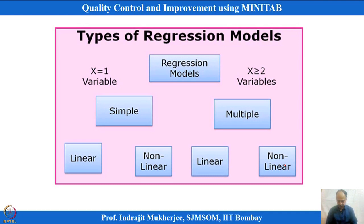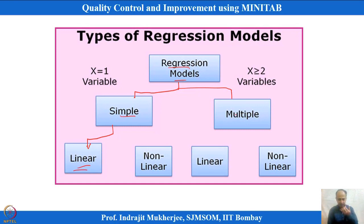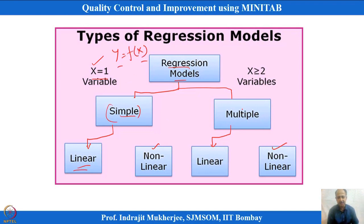There are different types of regression models. Simple linear regression has one X and one Y. Multiple regression has more than one X variable — up to n variables — with one Y. Both simple and multiple linear regression are important here. Non-linear relationships, such as polynomial equations, can also exist between X and Y.